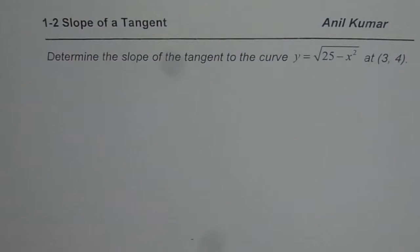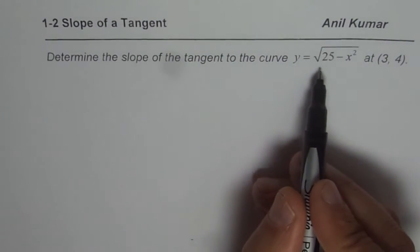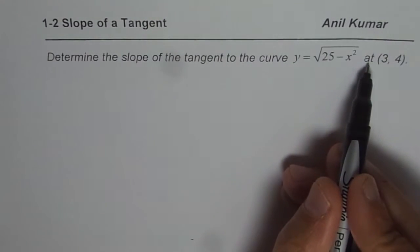I'm Anil Kumar and now we will find slope of tangent on a semicircle. The question here is determine the slope of the tangent to the curve y equals square root of 25 minus x square at 3, 4.